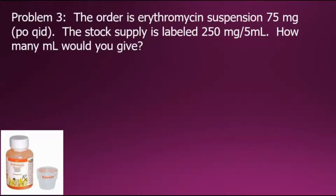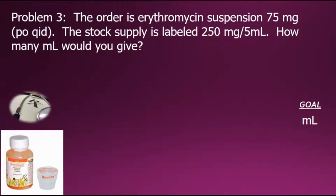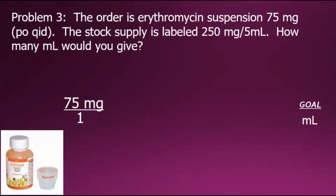Problem number three states the order is erythromycin suspension 75 milligrams PO QID. The stock supply is labeled 250 milligrams per 5 milliliters. How many milliliters would be given? To solve this problem, we need to find how many milliliters should be given — that will be our goal. We'll begin with the doctor's order expressed as a fraction: 75 milligrams over 1.